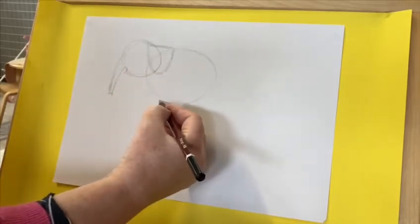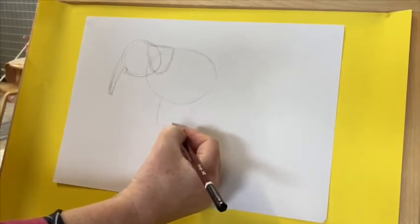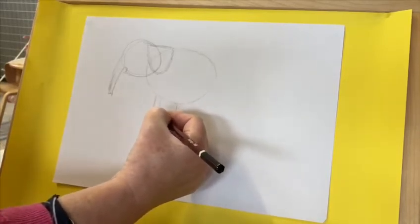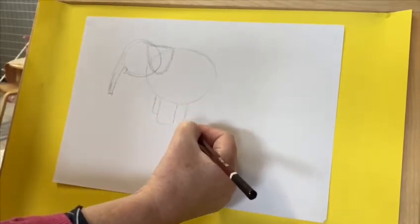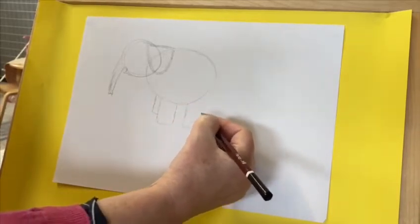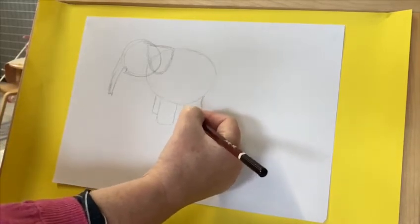Next, we've got the legs. Fat leg in the front, and another one hiding behind it. And over here, fat leg in the front, and another one hiding behind it.